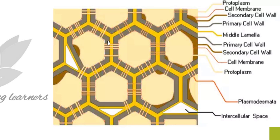So you can say that the cell wall and the middle lamella are traversed by plasmodesmata. Traversed means that plasmodesmata crosses the cell wall and middle lamella. And what is this plasmodesmata doing? It is connecting the cytoplasm of the two neighboring cells. So plasmodesmata is nothing but cytoplasmic strands — you can call them channels or connections between the cytoplasm of the two neighboring cells.